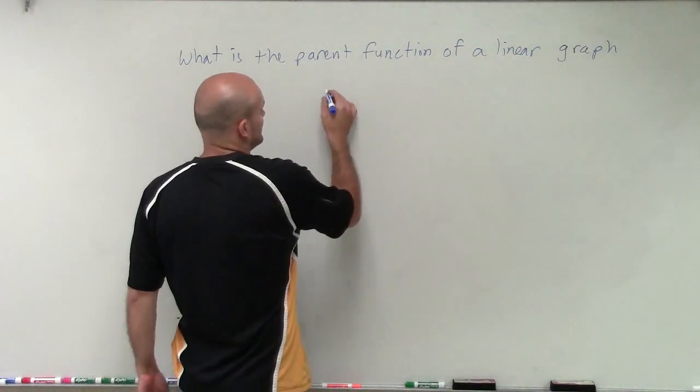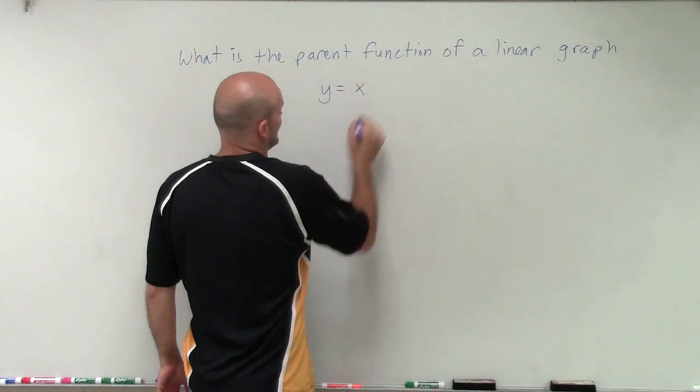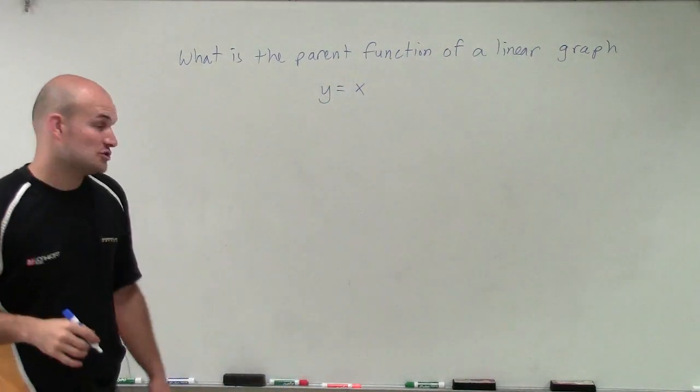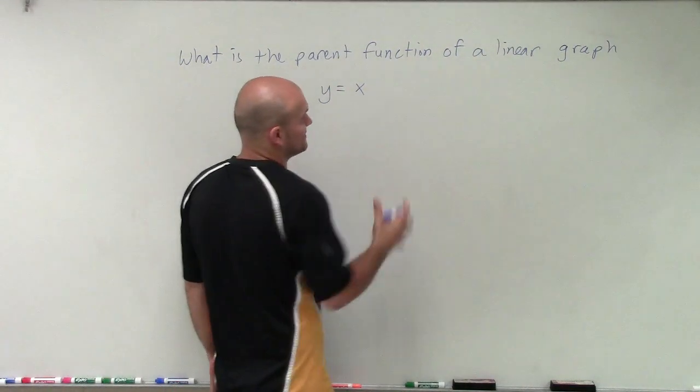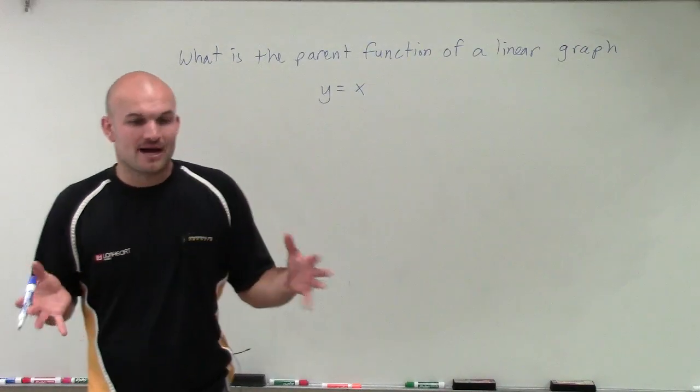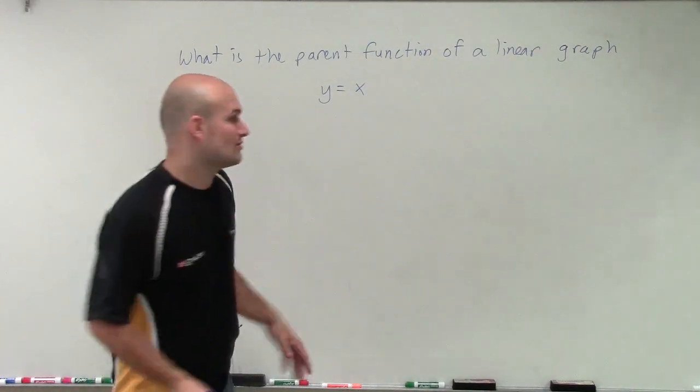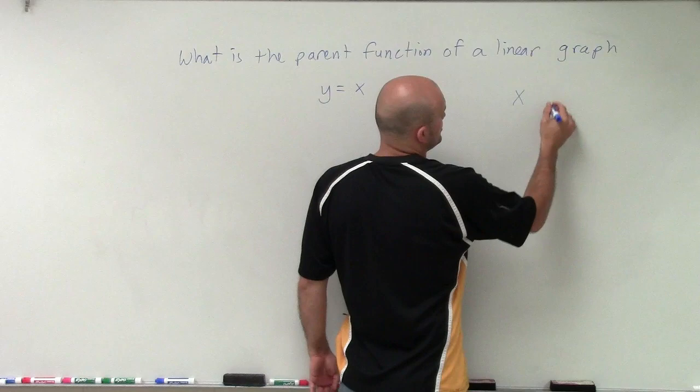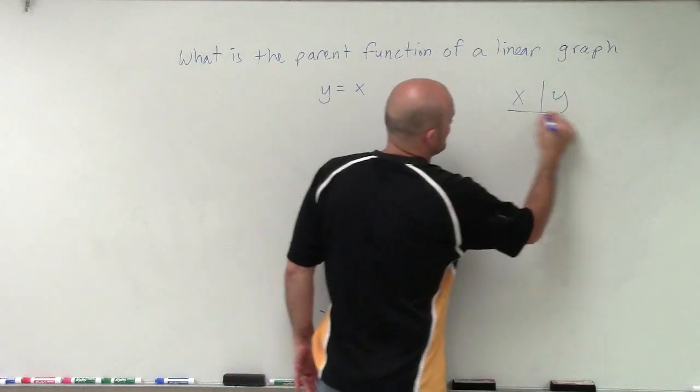The parent function of a linear graph looks like this: y equals x. This is what we call the identity function. If I wanted to graph this parent graph, meaning I'm not going to have any transformations, I'll just create a table.